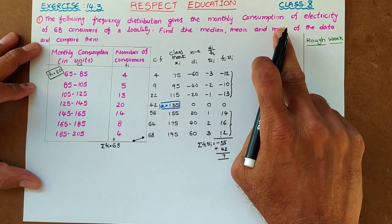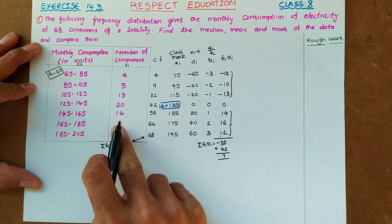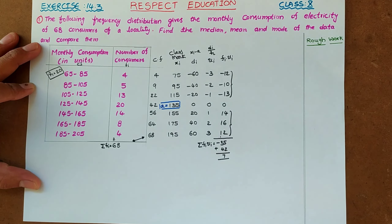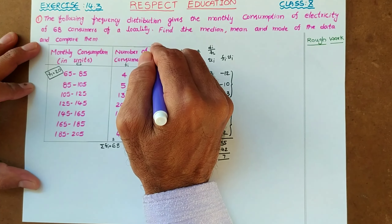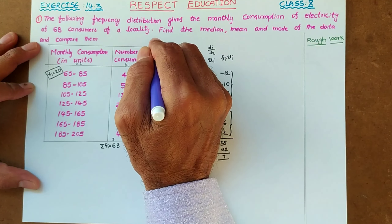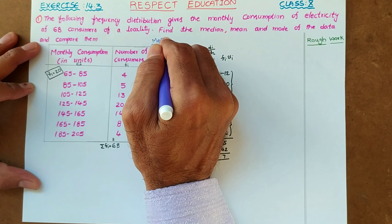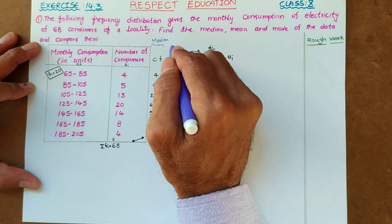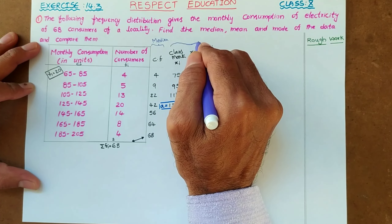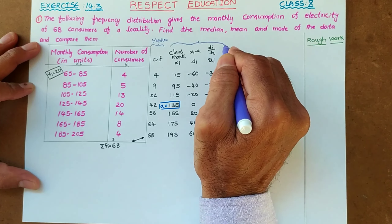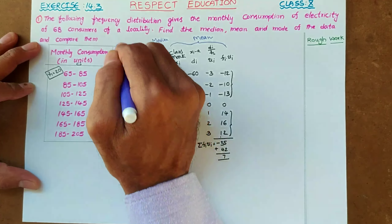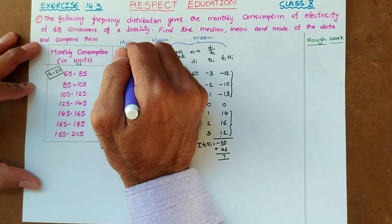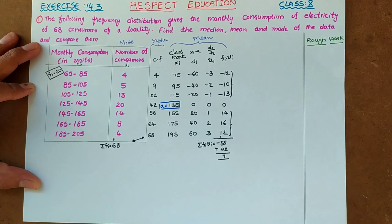For finding mode, the frequency column alone is sufficient. To clarify: the cf column is for finding median; the xi, di, ui, and fi·ui columns help us find mean; and using only the frequency, we can find mode. So all three measures can be found from this table.